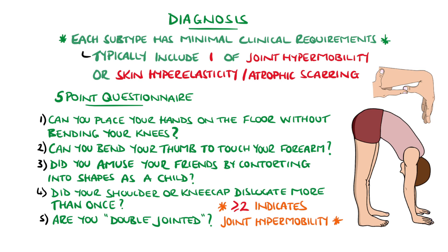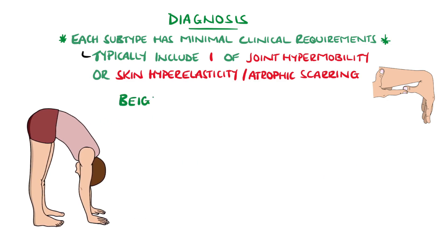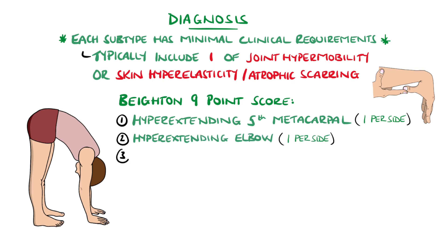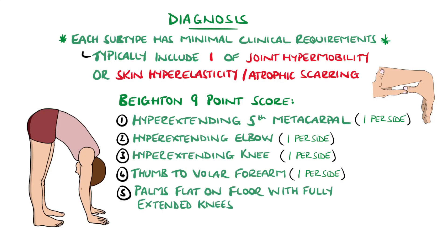If hypermobility is suspected, it can be further evaluated using the physical exam and the Beighton 9-point score. The movements include hyperextending the fifth metacarpal, hyperextending the elbow, hyperextending the knee, and opposing the thumb to the volar forearm. Each of these gives one point on each side, and there is an additional point for being able to touch the palms to the floor with fully extended knees.